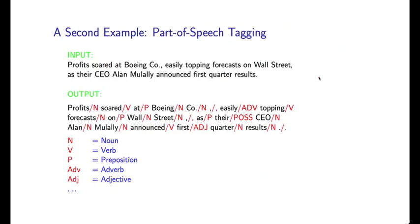Here's a second very important motivating example for log-linear models, and that's the problem of tagging. Specifically, in this example, we're going to look again at part-of-speech tagging. As a recap, the problem here is to take some sentence, some sequence of words as input, and to map this to a representation where each word has an associated tag.